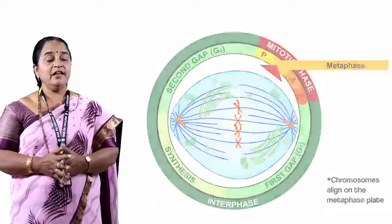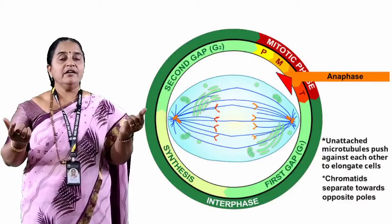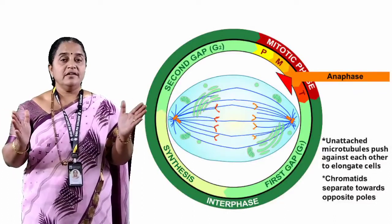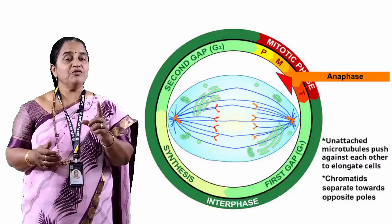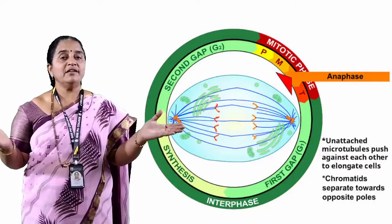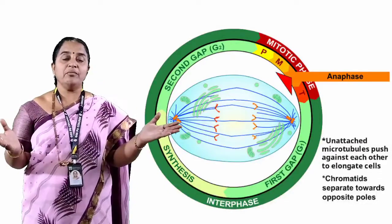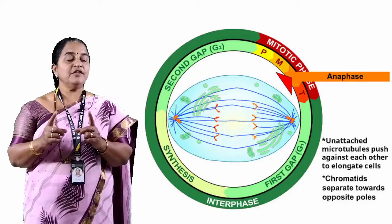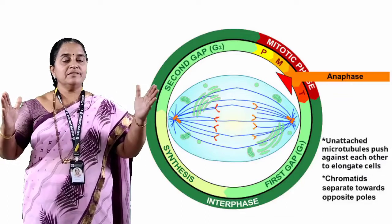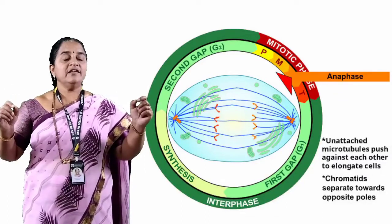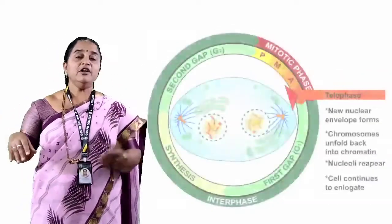Next is anaphase, where the centromere of each chromosome splits vertically, giving rise to chromatids. Thus, if there are 4 chromosomes, they form 8 chromatids; if there are 16 chromosomes, they form 32 chromatids. In the case of a human cell, 46 chromosomes give 92 chromatids. As soon as the centromere divides, the two sets of chromatids start moving to opposite poles, and at the end of anaphase each pole of the cell receives an equal number of chromatids.